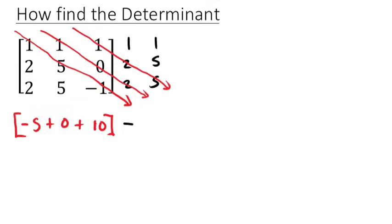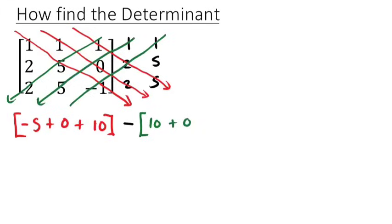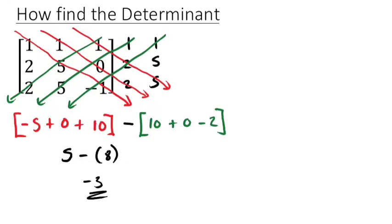Now we subtract what we have in the minor diagonals. The first minor diagonal: two times five times one, that's ten. Then we have five times zero, zero times one — that's zero. The last one: negative one times two, which is negative two. So for the first part we get positive five, minus from the brackets we have eight. The difference is minus three. So the determinant of squared matrix A is negative three.